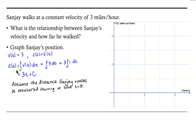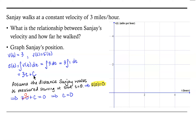Let's assume the distance Sanjay walks is measured starting at time t equals 0, meaning the distance at t equals 0 is 0 since he is just commencing his walk. This allows us to find the constant of integration. If s(0) equals 0, then 3 times 0 plus c equals 0, which implies c equals 0. So our position function is s(t) equals 3t.